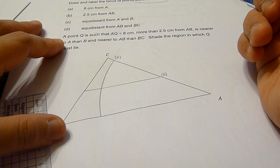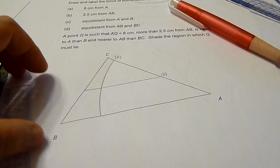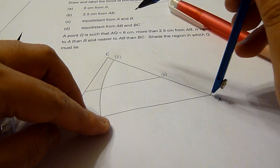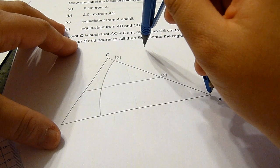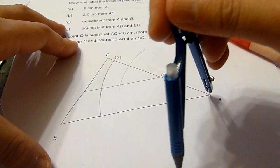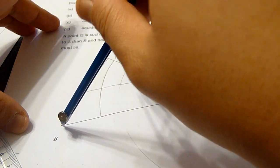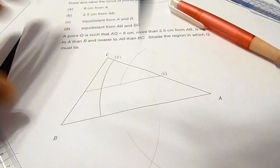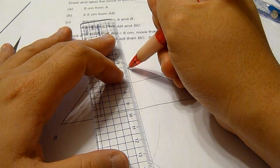Thirdly, we need to have equal distance from A and B, which means we will be constructing a perpendicular bisector between the two points A and B. Now, we join the intersection point.